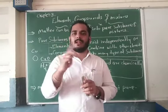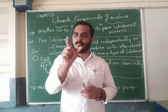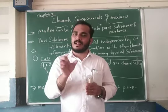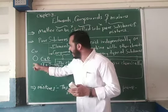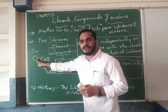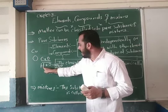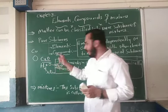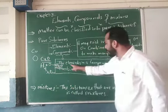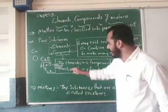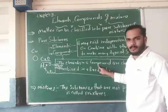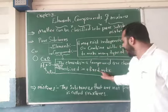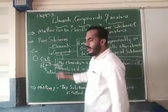Two different elements combine to form a simpler common substance — that is called a compound. The elements in a compound are chemically combined in a fixed ratio. One important point: the elements in a compound are chemically combined in a fixed ratio.